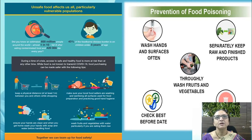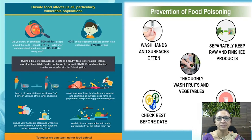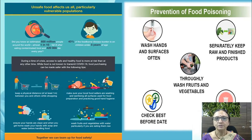Prevention of food poisoning: wash hands and surfaces often, keep raw and finished products separate, thoroughly wash fruits and vegetables, check best before dates, and if in doubt, throw the food away — do not eat it.